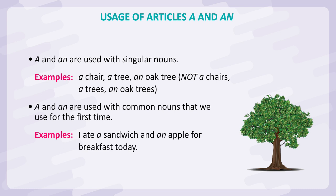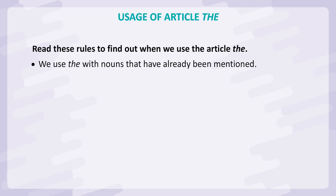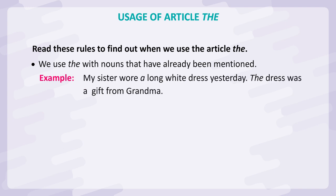Example: I ate a sandwich and an apple for breakfast today. Usage of article the — read these rules to find out when we use the article the. We use the with nouns that have already been mentioned. Example: My sister wore a long white dress yesterday. The dress was a gift from grandma.